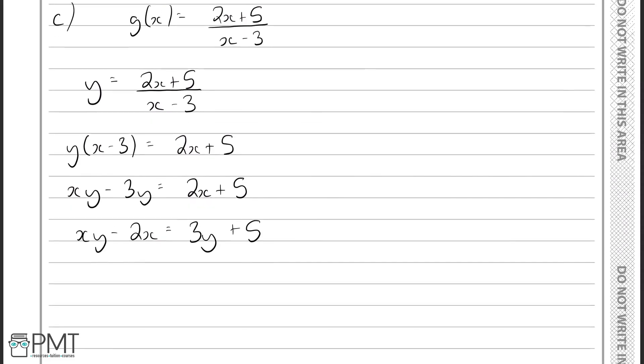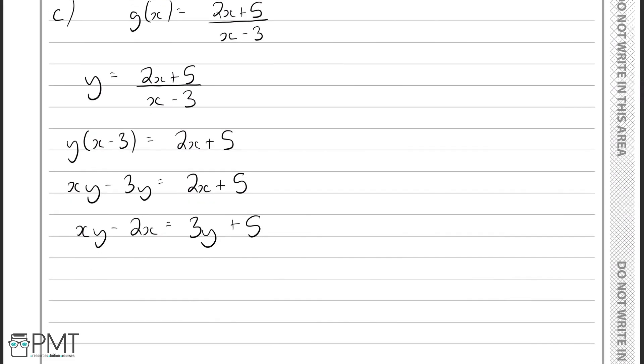And now I'm going to factorise the x on the left-hand side to get it by itself. So taking x out of both these, we have y minus 2 times x equals 3y plus 5. And now I can simply divide both sides by y minus 2. So we'll have 3y plus 5 all over y minus 2.